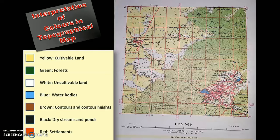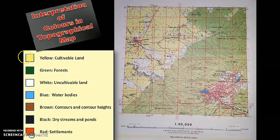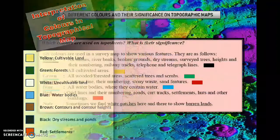Blue signifies water or water bodies. Brown color is used only for contours and their contour heights — it shows elevation above sea level. Black color: all dry streams and dry ponds are shown in black. The next color is red — for settlement areas, those will be shown in red color. So these are all the colors we need to know.